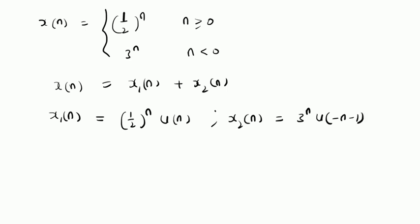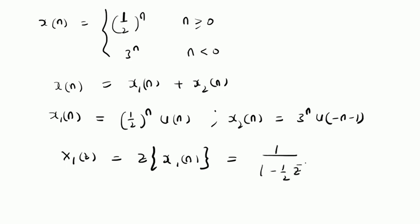Now we will use the linearity property to find the overall Z-transform. For this purpose, first we have to find X1 of Z, the Z-transform of X1 of n, which is given by 1 over (1 minus 1/2 Z inverse). We are using the Z-transform pair: alpha^n u(n) transforms to 1 over (1 minus alpha Z inverse). The ROC is |z| greater than 1/2, that is, the region outside the circle of radius 1/2.